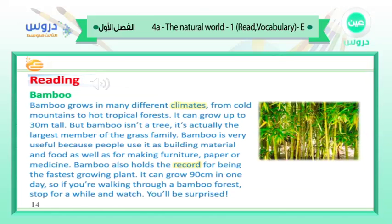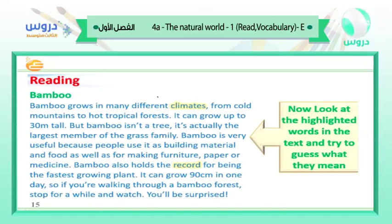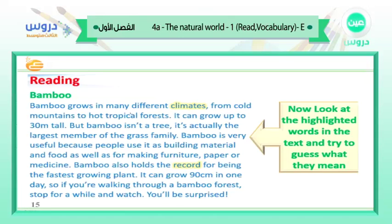Let's guess the meaning of climate and record. Bamboo grows in many different climates — from cold mountains to hot tropical forests. So climate is like the weather, the temperature — it can be cold or hot at different times and in different areas.